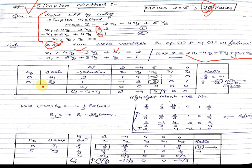In the simplex method we proceed by doing iterations using tables. In the first table, we list the basis — s1 and s2. The cb (coefficient of basis) is 0 for both. The solution values are 2 and 1. The cj row has coefficients: 2, -4, 5, 0, 0 for variables x1, x2, x3, s1, s2.